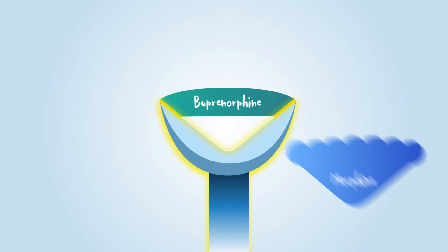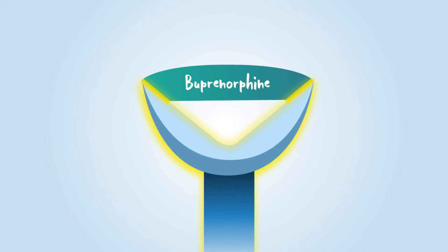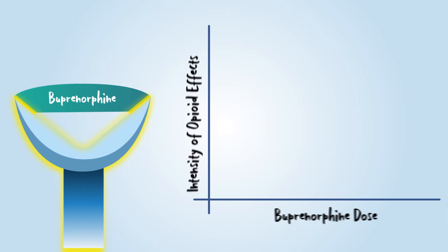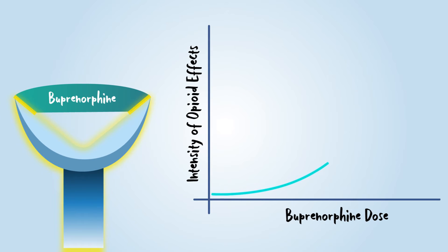Buprenorphine partially activates the mu opioid receptor, reducing withdrawal symptoms and cravings. Additionally, it has a ceiling effect that enhances the medication's safety profile, preventing overdoses from occurring at increased doses.